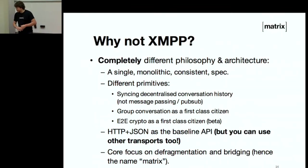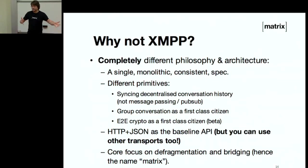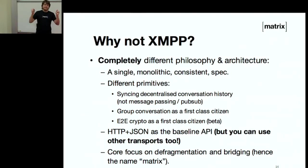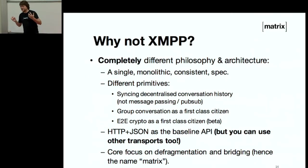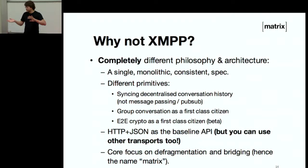A big difference to XMPP is it's called Matrix — it's about matrixing things together, it's defragmentation. It's not trying to be the 15th protocol that everybody's going to switch to. It's very pragmatic. It honestly tries to be the glue, the very lowest common denominator glue between everybody else.